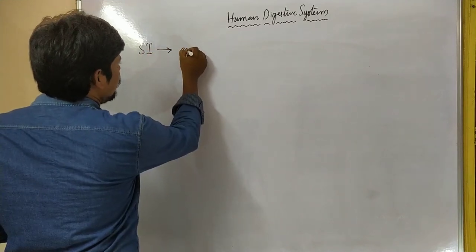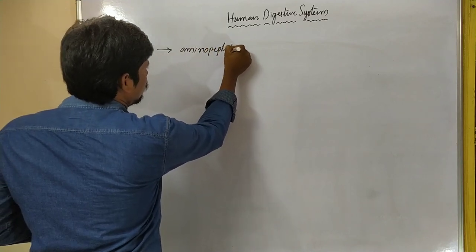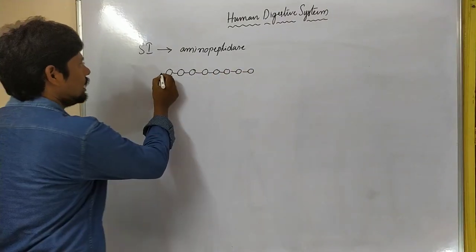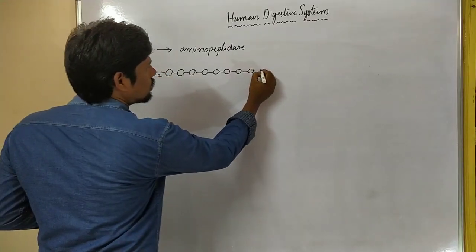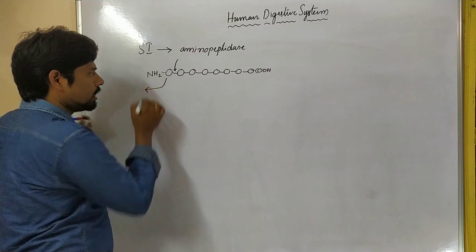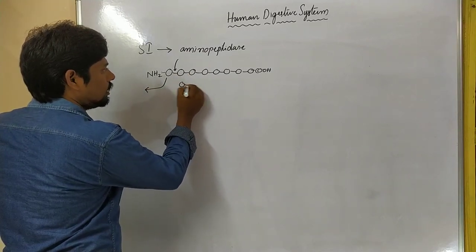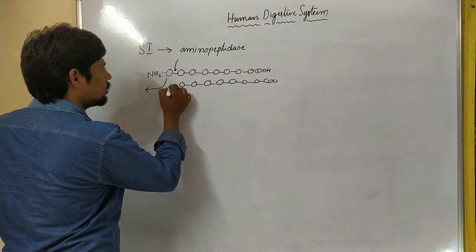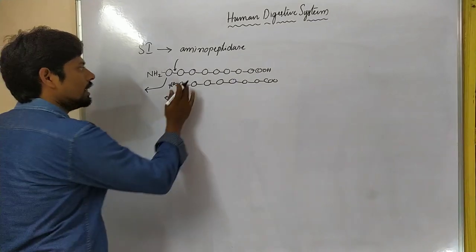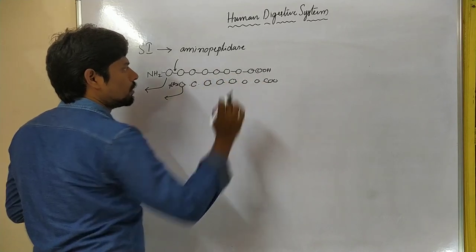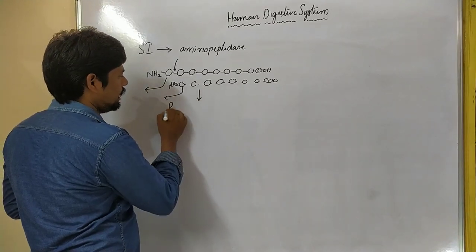The next enzyme produced by the small intestine is aminopeptidase. Aminopeptidase is the enzyme that acts at the site of the amine group (–NH2) of the polypeptide. For example, in a polypeptide that contains the amine group at one end and the carboxyl group at the other, aminopeptidase acts at the NH2 end, releases an amino acid, and continues cleaving peptide bonds near the amine group, finally producing free amino acids.